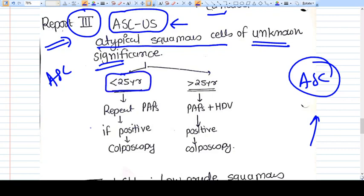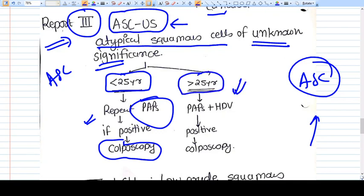If the patient is less than 25 years, we repeat the Pap, and if positive, go for colposcopy. If more than 25 years, we also add HPV testing. If either comes positive, we should go for colposcopy.